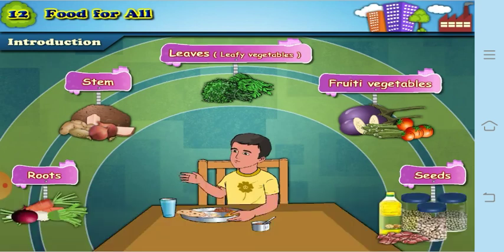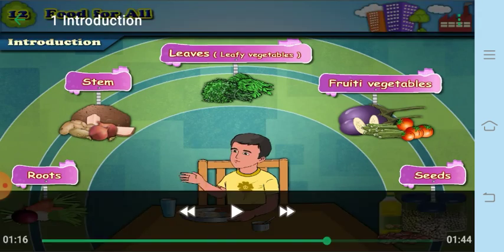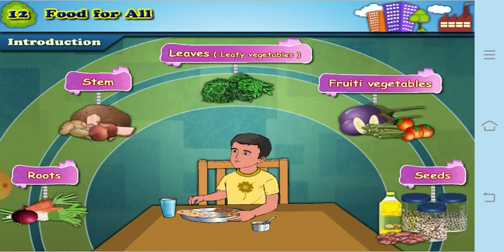Yams are nothing but stored food vegetables which grow inside the soil. For example, sweet potato is called a yam. Elephant's foot — called suran — is another example. Though they grow inside the soil, they are classified as stems.